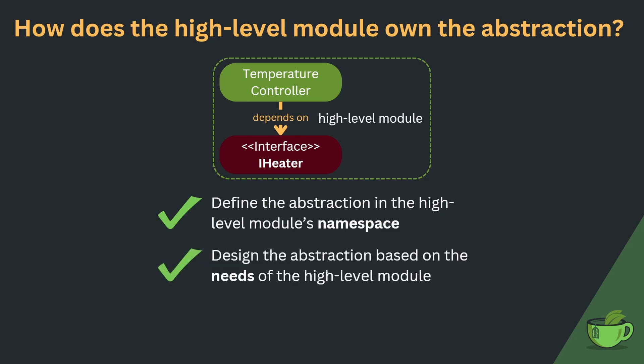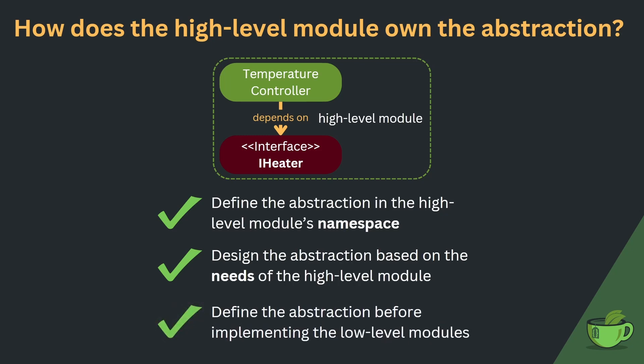The critical point is that we need to design the API of the abstraction based on the needs of the high-level module. We should ask: what does the temperature controller need from a heater in order to control the temperature — rather than what can the heater provide? A good way of going about this is to define the abstraction before implementing the low-level modules, implying a top-down design: general capabilities first, details designed last. Dependency inversion in code design perfectly fits the typical flow of a project.